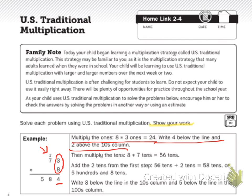Then multiply the tens. 8 times 7 tens equals 56 tens. So I multiply these two together and I got 56. I'm going to write that over here — 56.